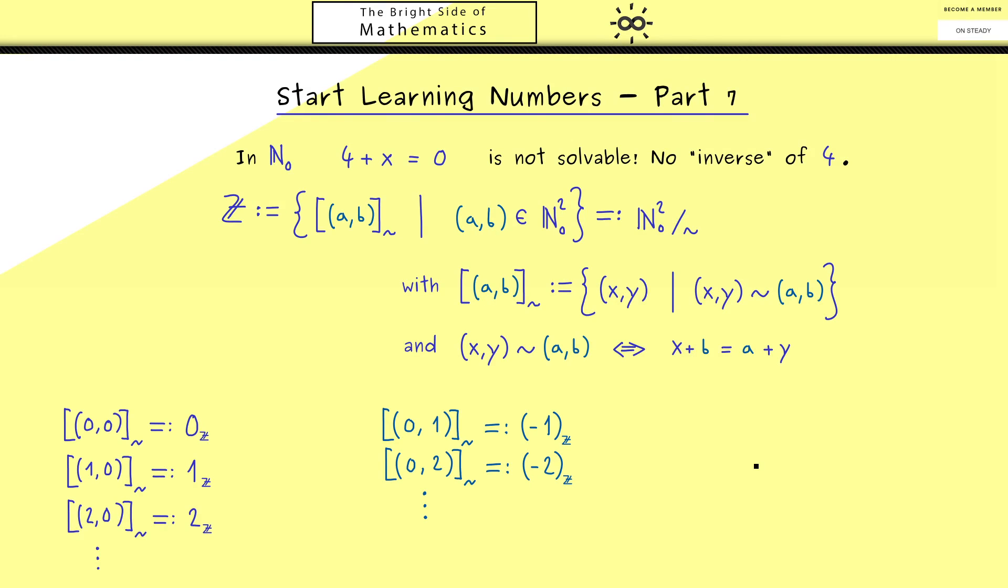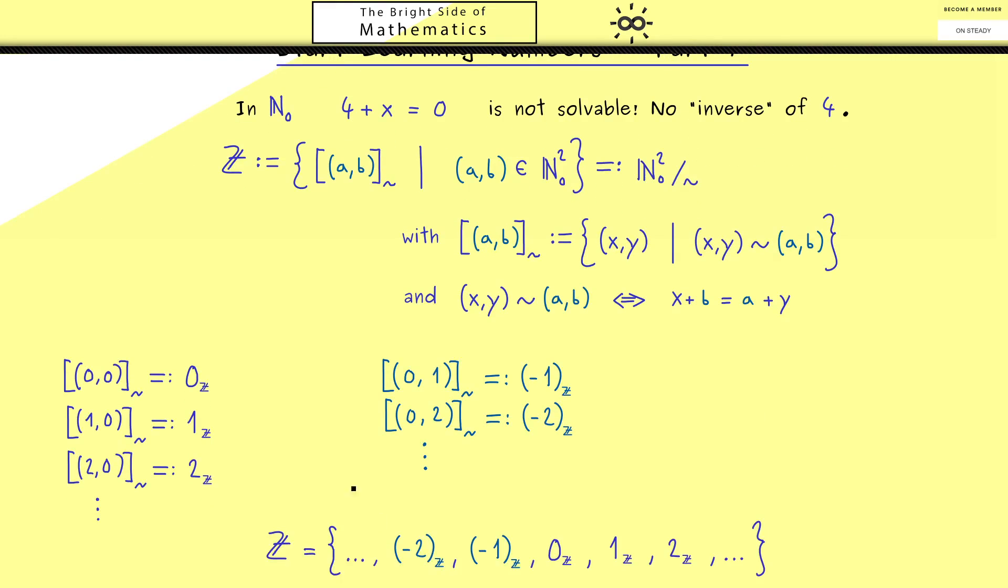And then in the same way we can just continue with the new names on the right-hand side here. Now with this, the integers look much more familiar. For example, ℤ can now be written as the set of all these numbers that go in both directions.